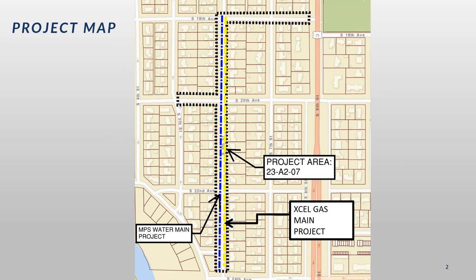This is a vicinity map for our project and shows the rough limits of construction. The project area includes 6th Street from 18th Avenue to 24th Avenue South, 18th Avenue from 6th Street to 8th Street, and 20th Avenue South from 4th Street to 6th Street.